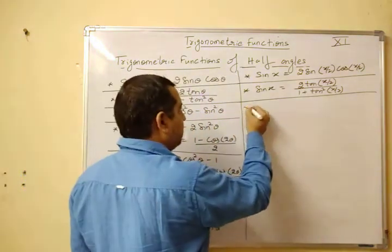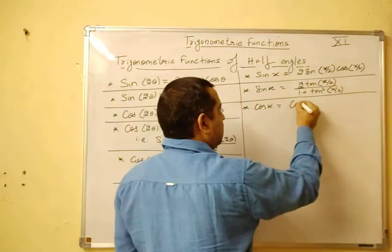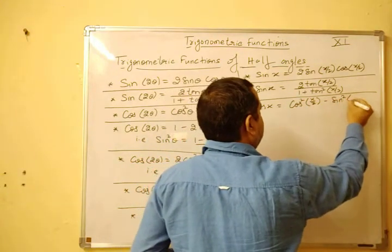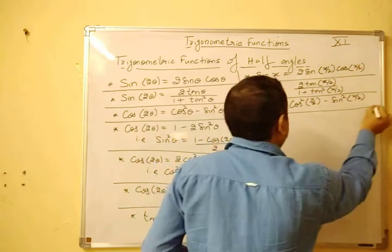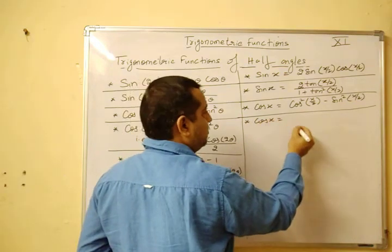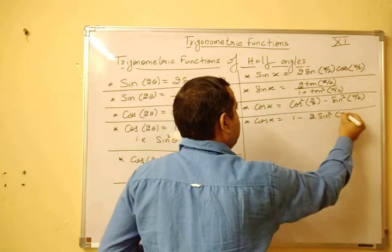Then you have cos of x, this is cos square x by 2 minus sin square x by 2. Then you have this cos of x, this is equal to 1 minus 2 sin square x by 2.